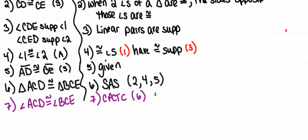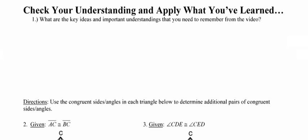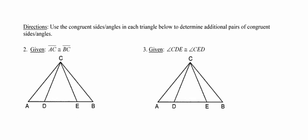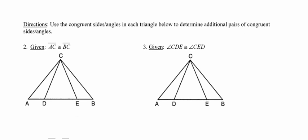That would be another way to write your reason. There should be lots of good ideas you picked up over the course of this video. If you don't have some key ideas and essential takeaways, go back and re-watch the video. Then at the bottom of the page, go ahead and use the congruent sides or congruent angles in each picture to find additional pairs of congruent parts. Thanks, guys.